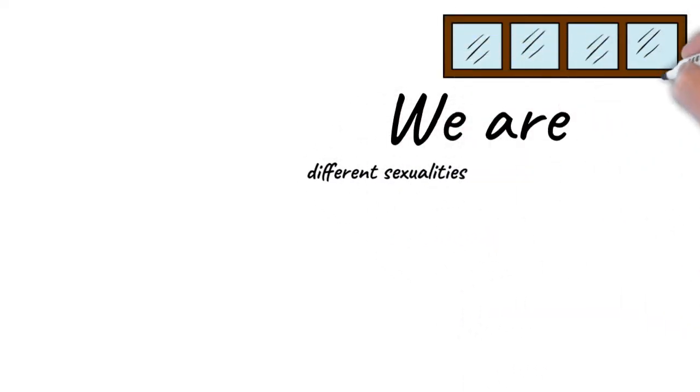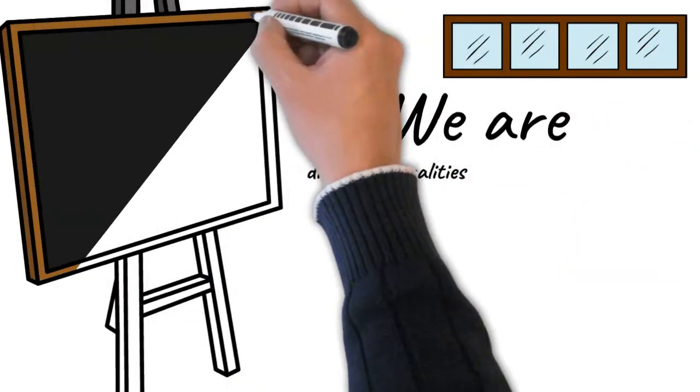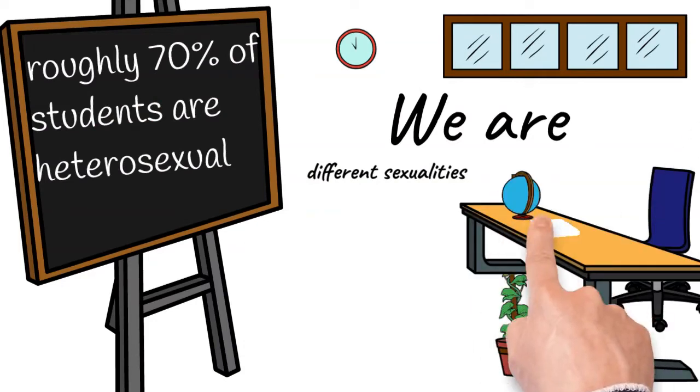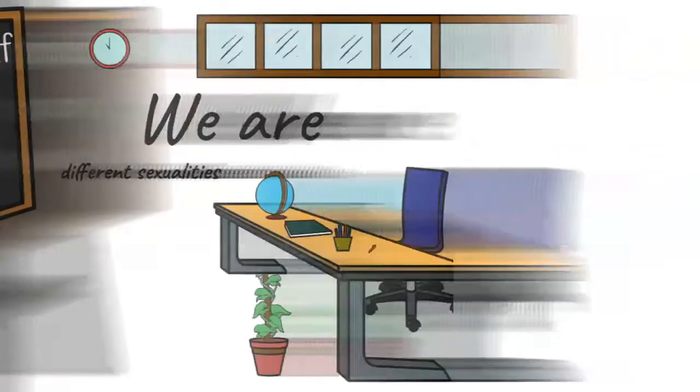School is a place where the majority of young people feel safe and confident enough to find out who they are. 70% of students said they were heterosexual with 10% saying they were lesbian or gay.